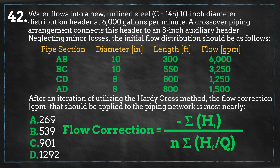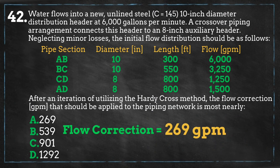Using our data, I calculate a flow correction of 269 gallons per minute for the first iteration of the Hardy Cross method. The correct answer is A.